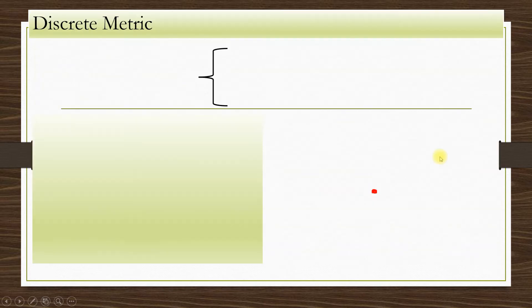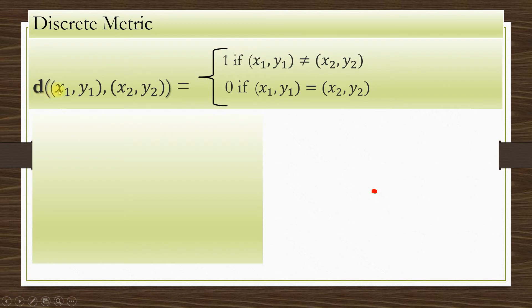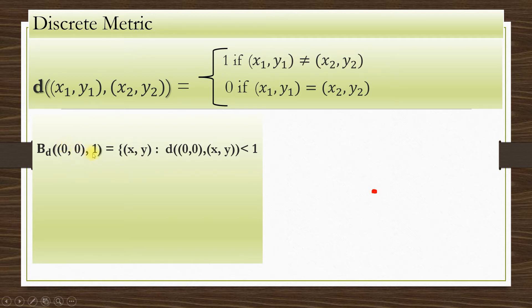So we move on to some examples. The first one is the discrete metric. We know that the discrete metric on R2 is defined as d((x1, y1), (x2, y2)) = 1 if (x1, y1) ≠ (x2, y2), and 0 if (x1, y1) = (x2, y2). Here we will consider the example on R2 only. We consider an open ball with center (0, 0) and radius 1.